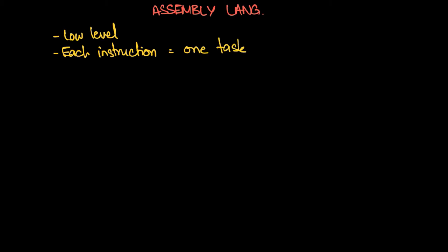A task could be something like adding two numbers or storing something at a particular address in memory. Since it's a low-level programming language, it also means that it is machine dependent. What you can do with assembly language on a particular computer is dependent on that particular machine's instruction set.